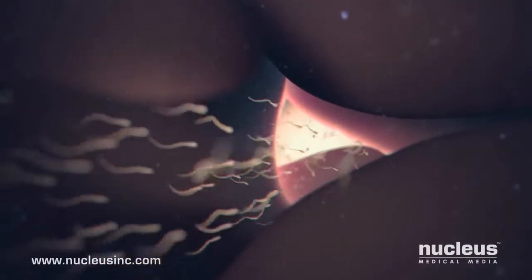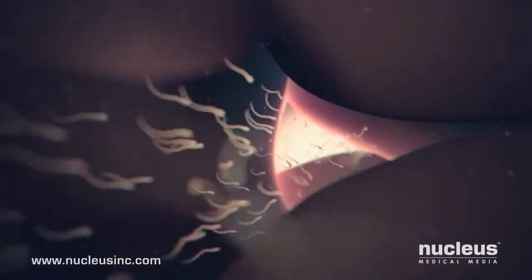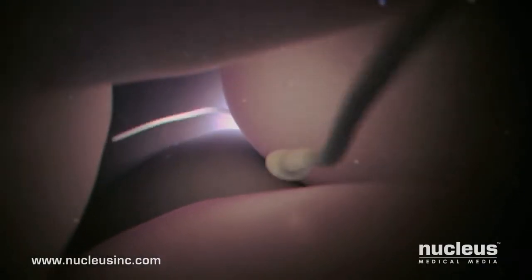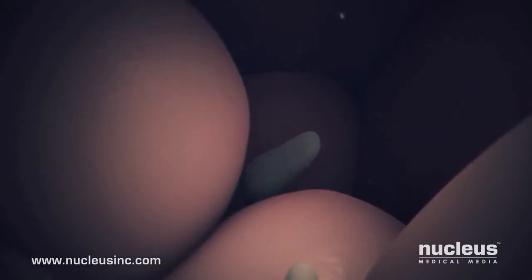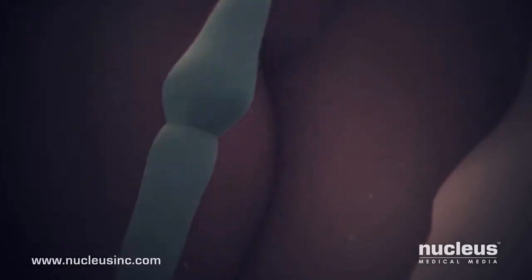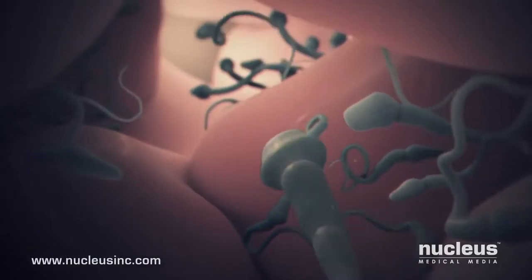The sperm swim through the cervical mucus, which is thinned to a more watery consistency for easier passage. Once inside the cervix, the sperm continue swimming toward the uterus, though millions will die trying to make it through the mucus.